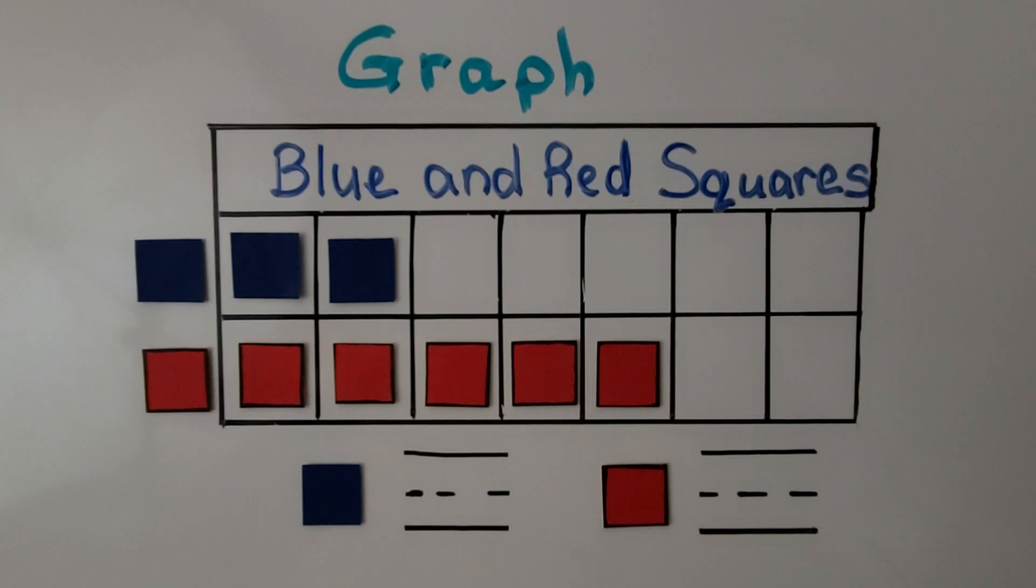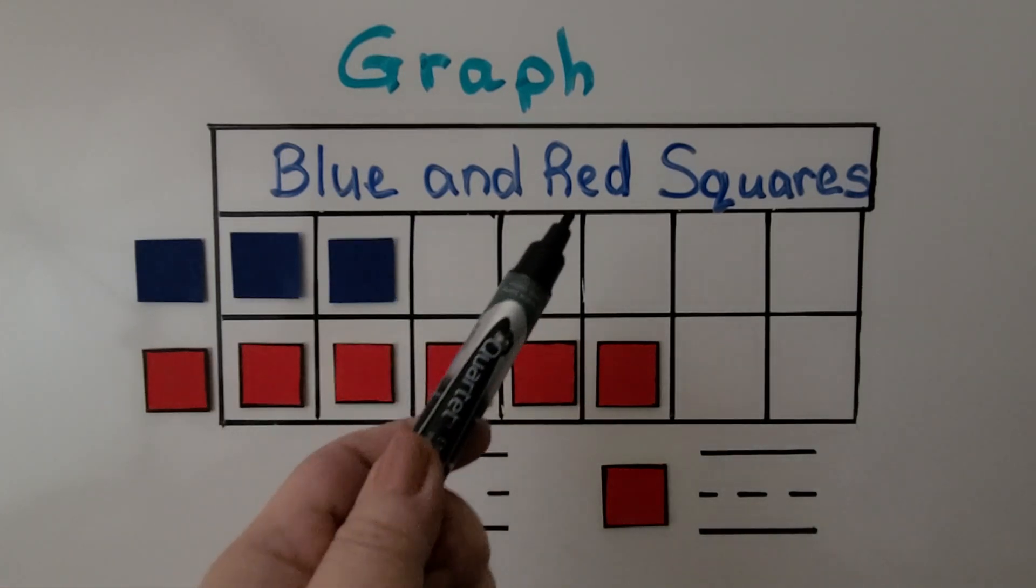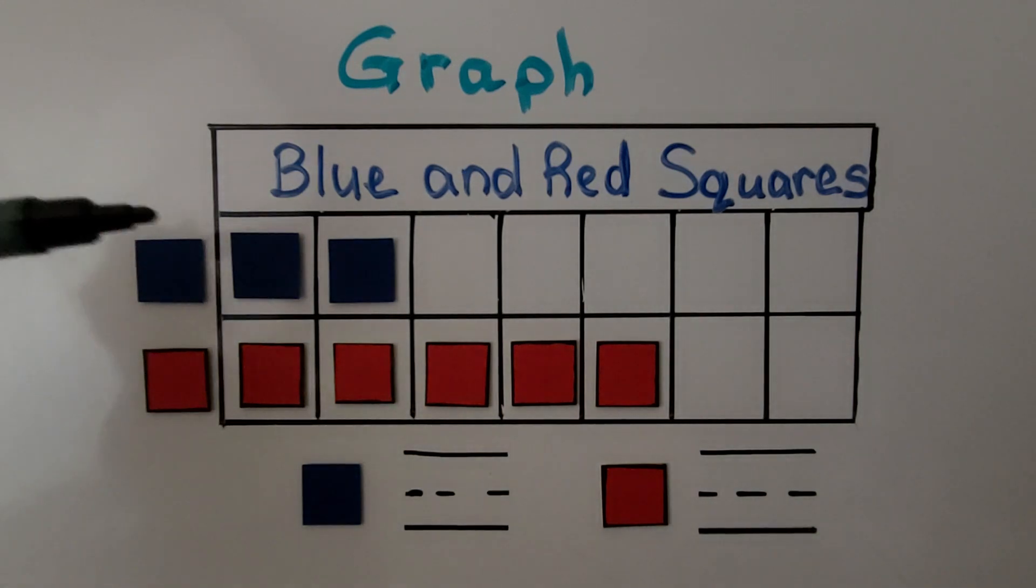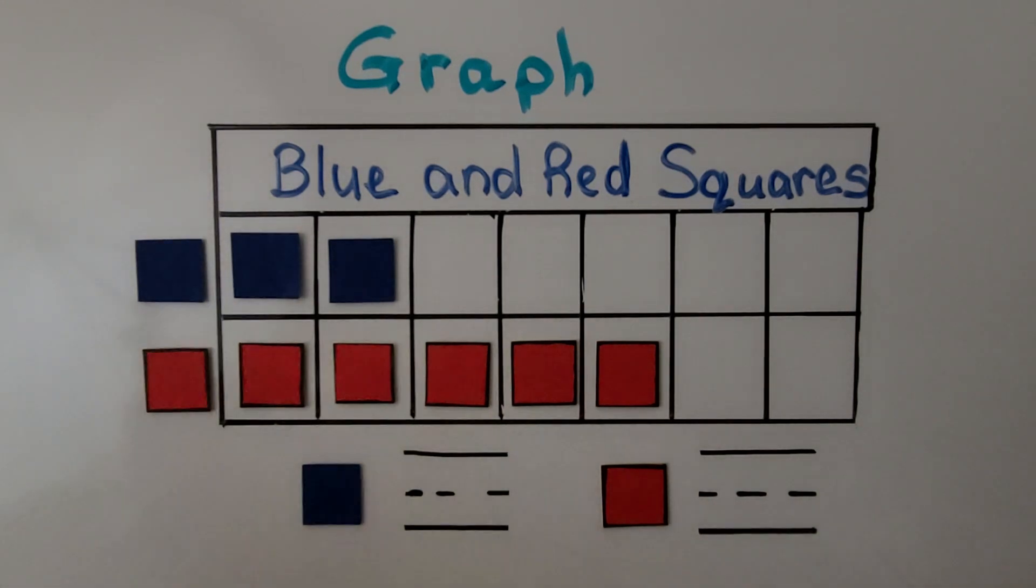Here we have a graph titled blue and red squares. There are two categories, blue and red. We see our picture labels for the blue row. There's a blue counter square, and for the red one, we have a red picture label. We can count the number of blue squares and red squares in the graph. We don't count the picture labels on the outside. We only count what are in the boxes.